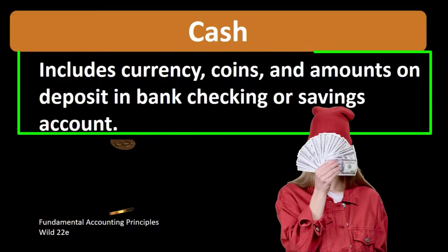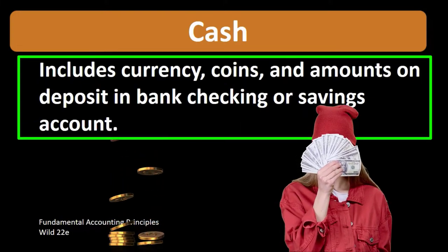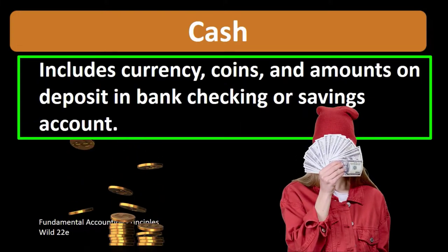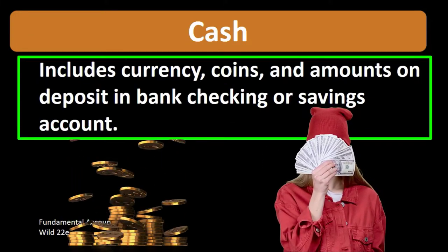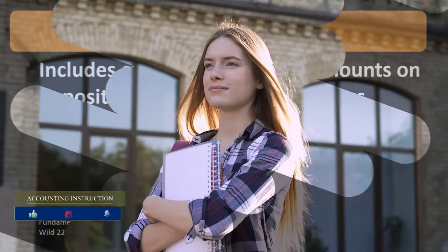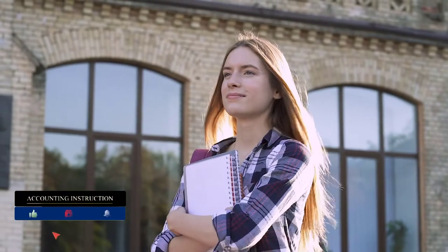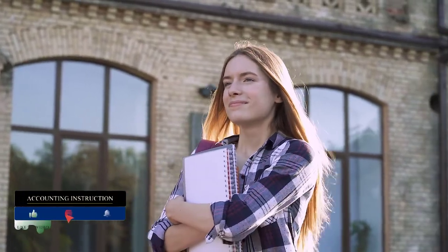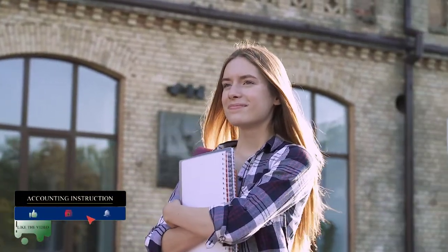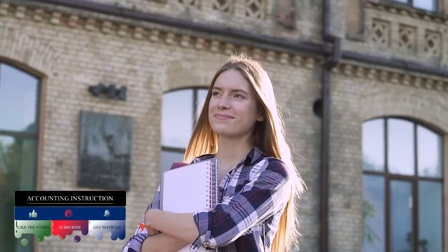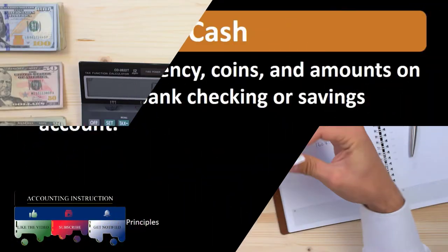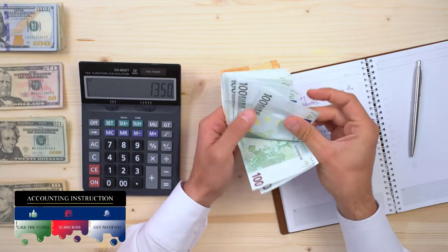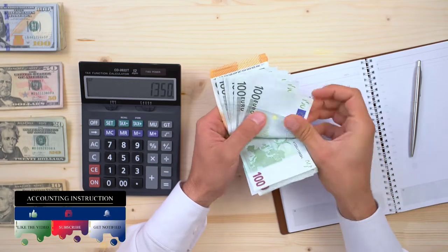Cash includes currency, coins, and amounts on deposit in bank checking or savings accounts. When we're thinking of cash in the most strict terms, we're thinking basically of those things that we generally think of as cash, including currency, coins, and amounts in the bank.